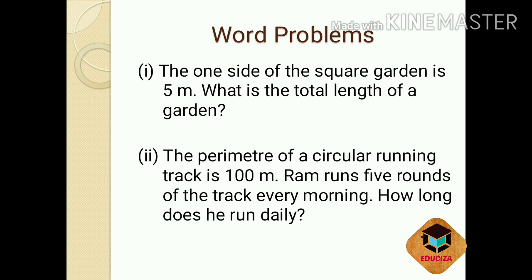First word problem: the one side of a square garden is 5 meter. What is the total length of the garden? You have to find out the perimeter. One side of the square garden is 5 meter, and you know that all the sides of a square are equal and a square has 4 sides. So it is now very easy to find out the perimeter of the square garden.